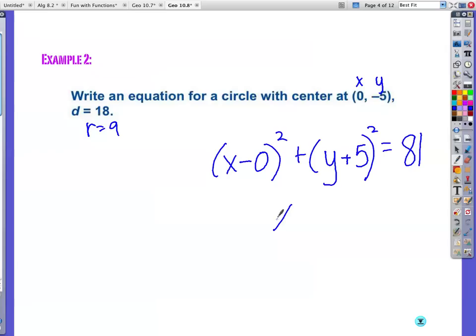What I would actually prefer is if we just go x² + (y + 5)² = 81. Okay, this really isn't simplified. I probably will not count it wrong. However, it would be better if you just took the time to not put minus 0.